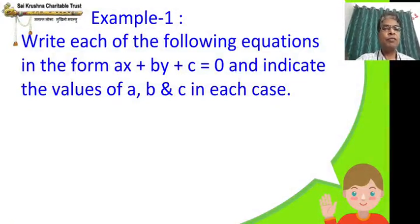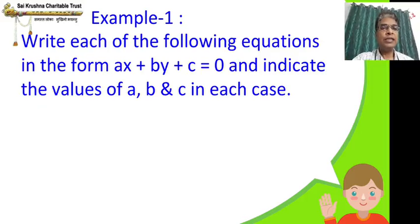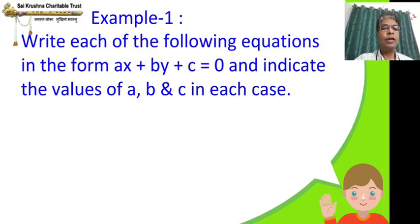First example: write each of the following equations in the form ax + by + c = 0 and indicate the values of a, b, and c in each case. Listen closely — this is the most important thing, how you will be able to understand what exactly is meant by a linear equation in two variables. Whatever equation is given, we are going to convert that to ax + by + c = 0, and also understand what a, b, and c are — with that you will be able to understand what is a constant and what is a variable.